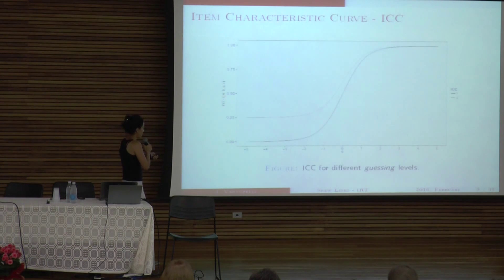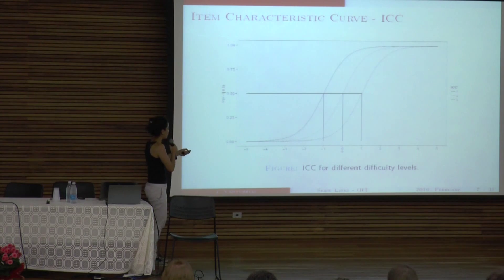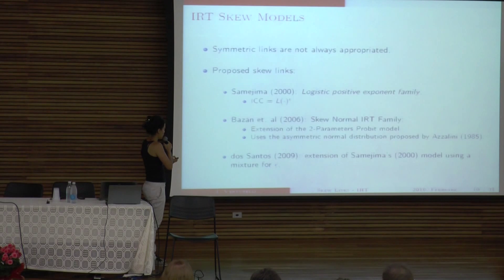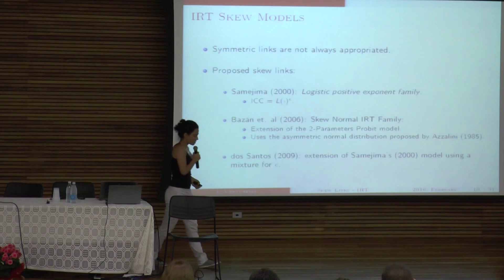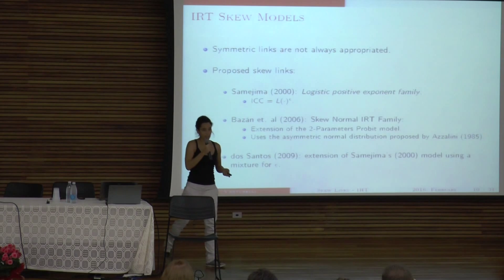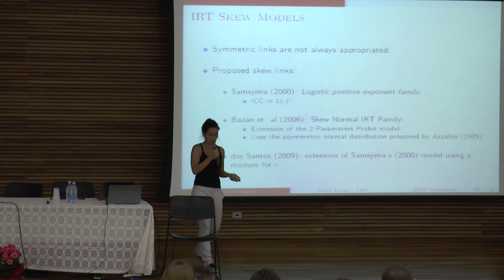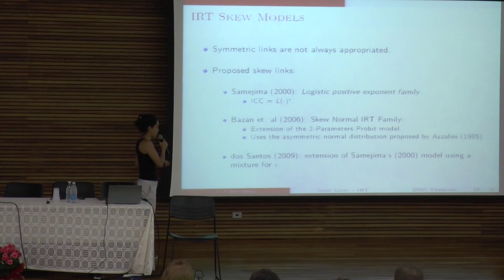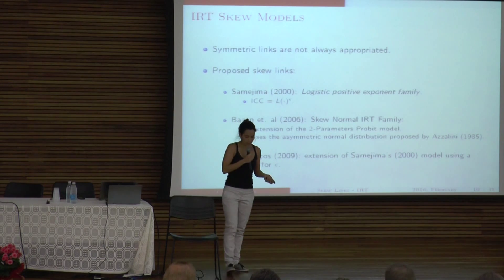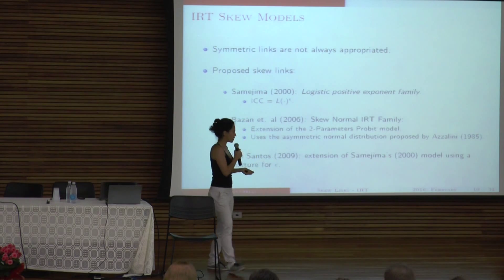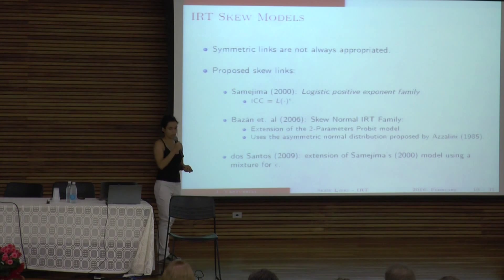So our work is, if you see here, these curves are all symmetric. The way that they work, like they are symmetric from this point here to here. So it's very symmetric. And our work is to create an item characteristic function that's not symmetric. So we want to use an asymmetric curve. Because sometimes the symmetric link is not the best one, depending how the item is written.